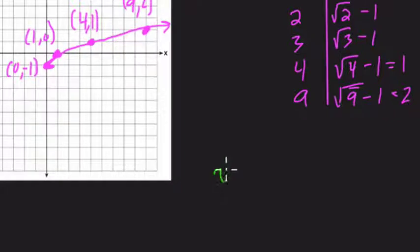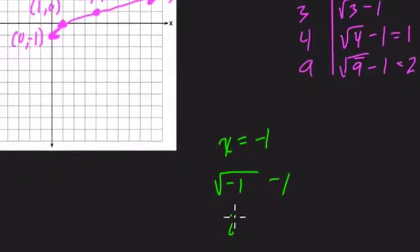If x is negative one, we have the square root of negative one minus one, and that's the number i. i is the square root of negative one minus one. This is an imaginary number. There's no place on this graph for imaginary numbers.